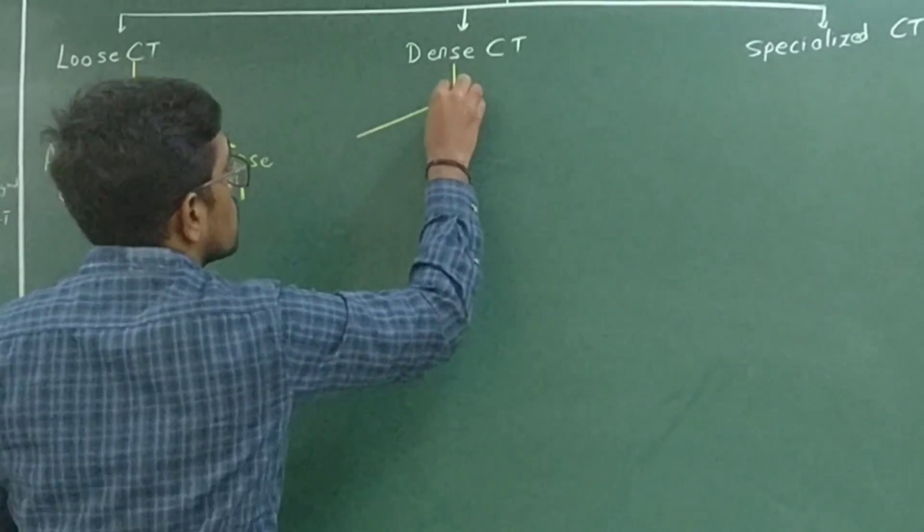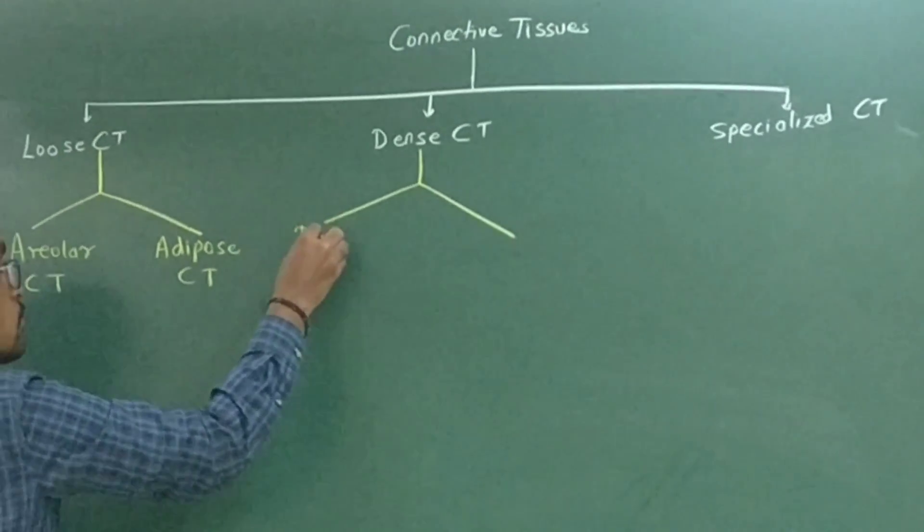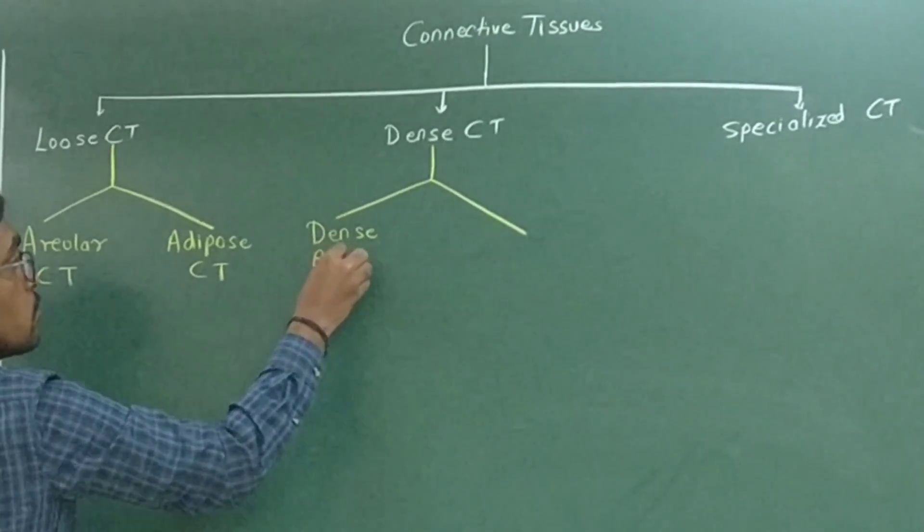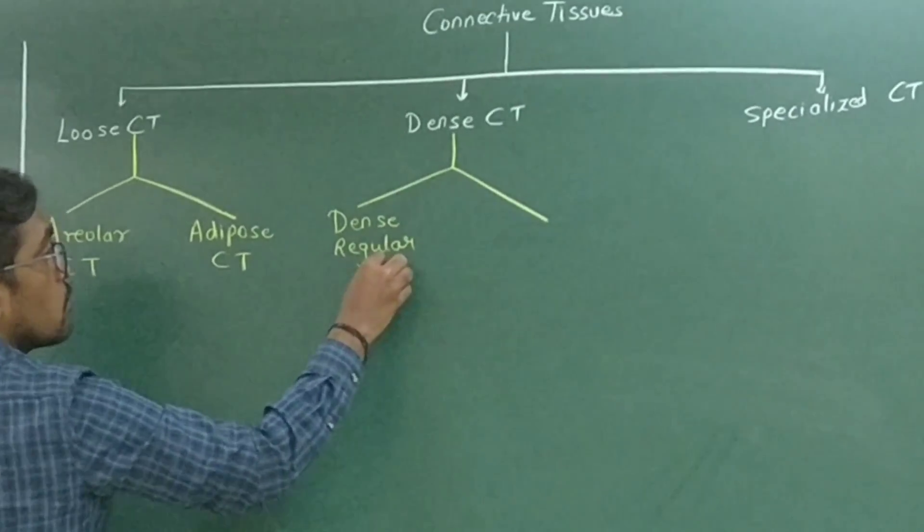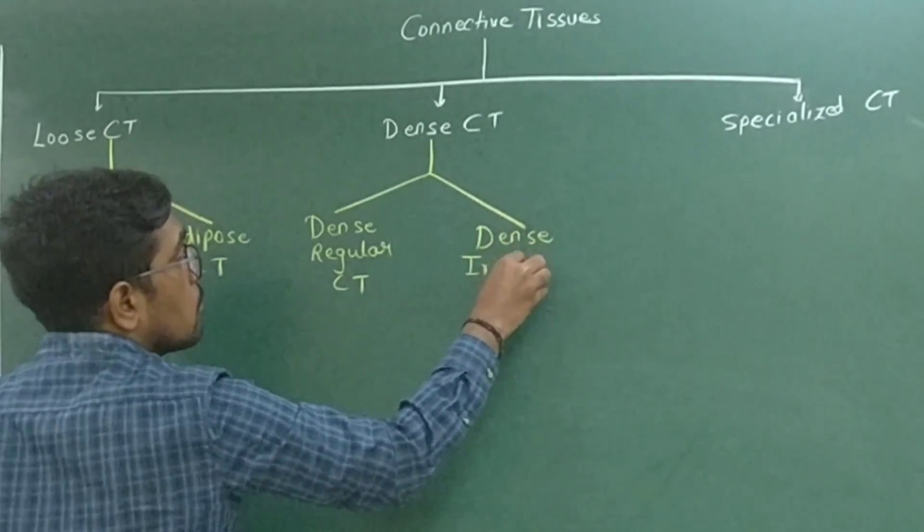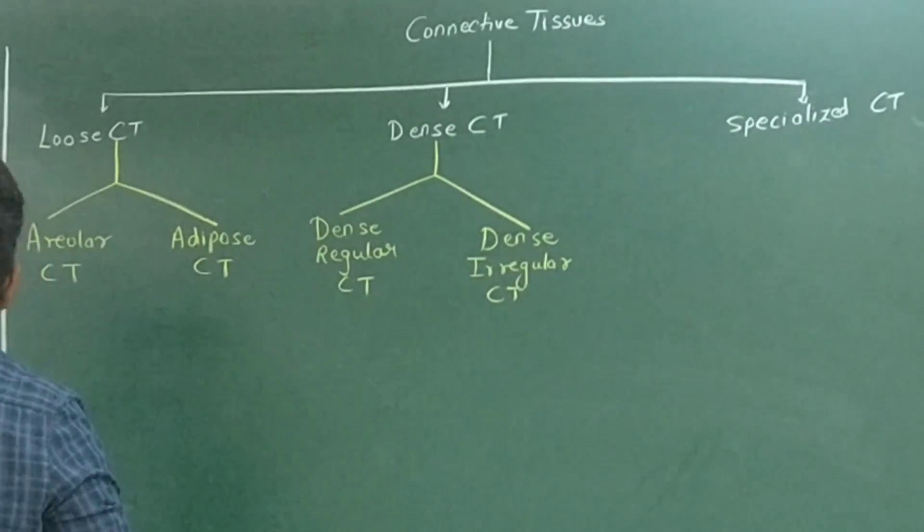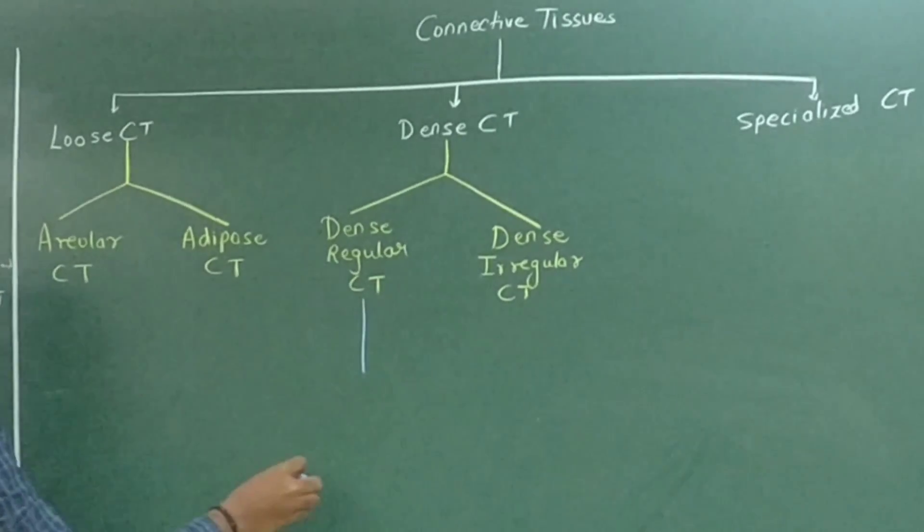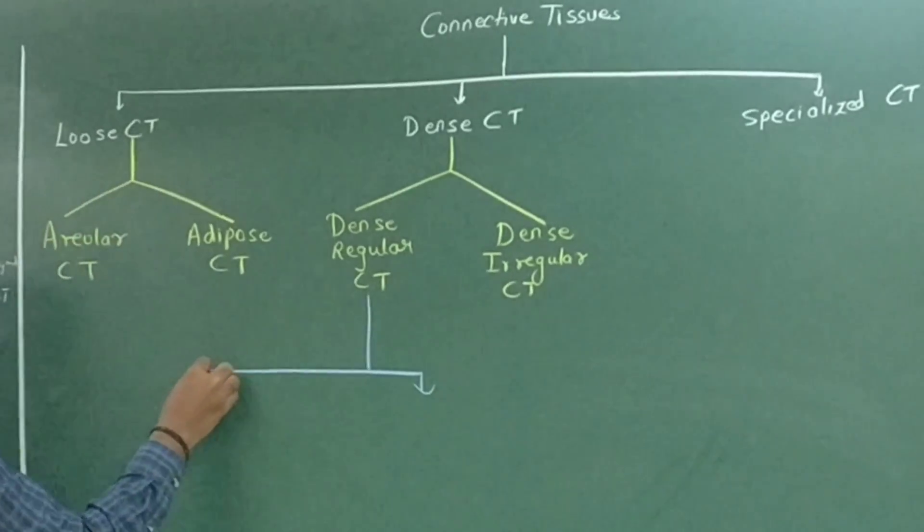Dense connective tissue is divided into two parts: dense regular connective tissue and dense irregular connective tissue. Dense irregular connective tissue simply means that they are not arranged in a special pattern.